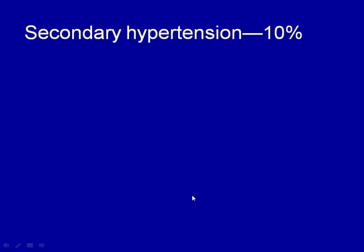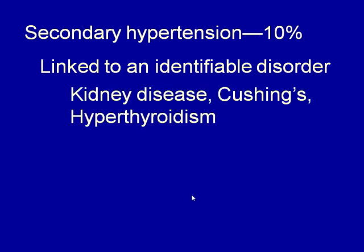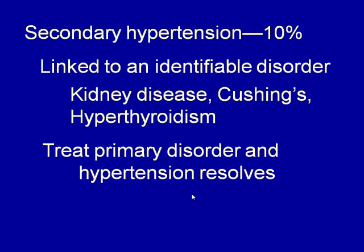Secondary hypertension accounts for about 10% of hypertension cases. This type has an identifiable underlying disorder: kidney disease, Cushing syndrome, and hyperthyroidism can all cause hypertension. If you treat the primary disorder, the hypertension typically resolves.